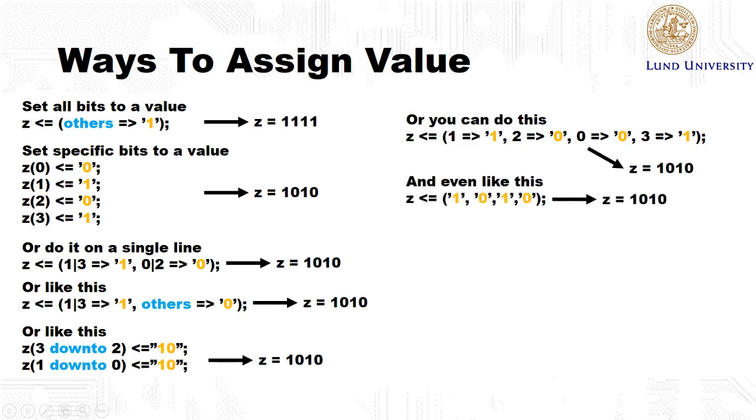If we instead do like this, the order is very important. So the leftmost one will be assigned to bit number 3, and the rightmost 0 will be assigned to bit number 0. We will get the same result if we enclose the value within quotes.